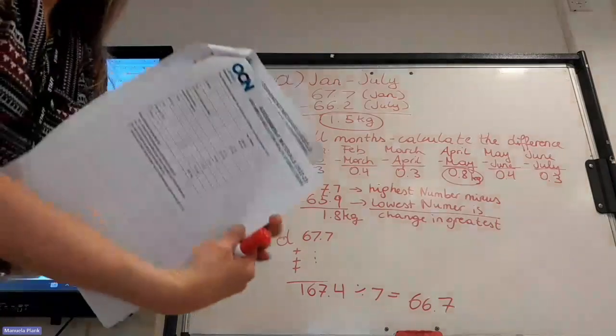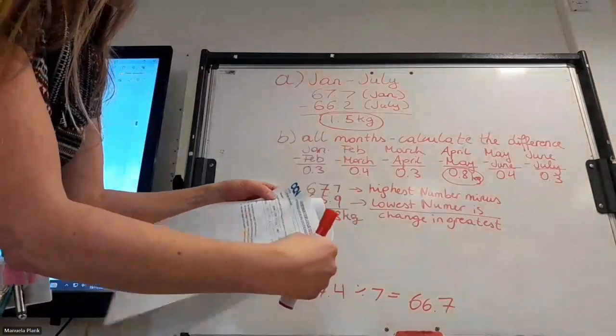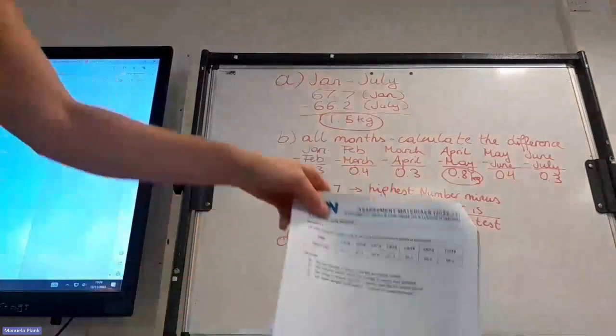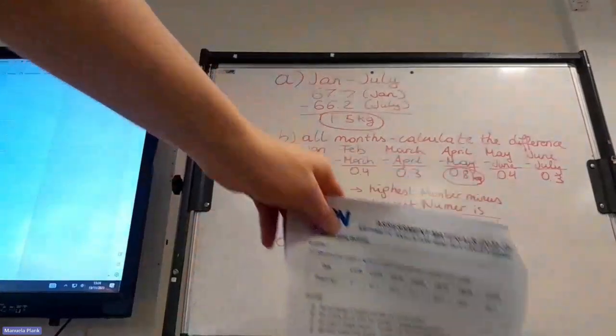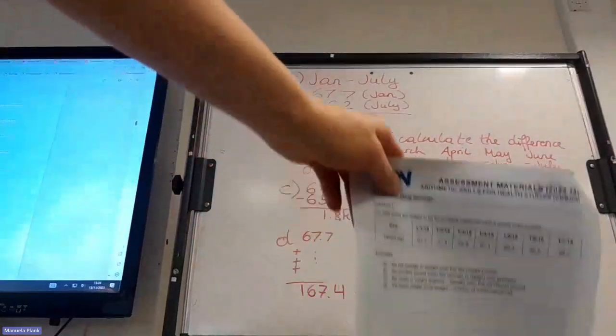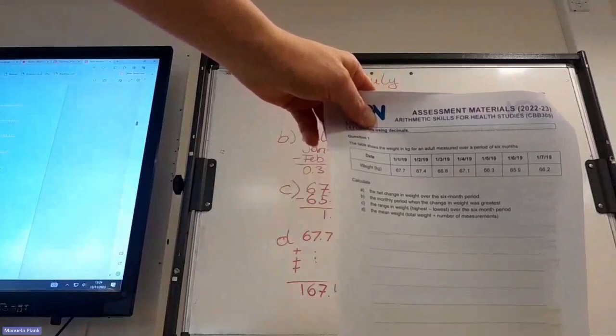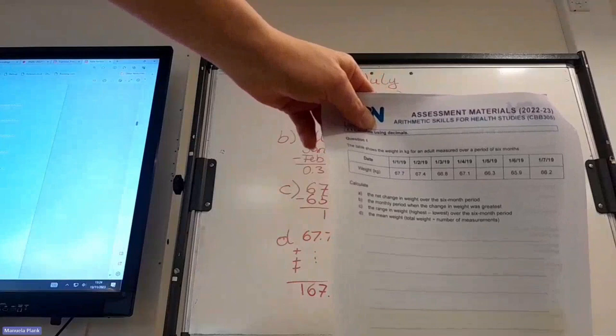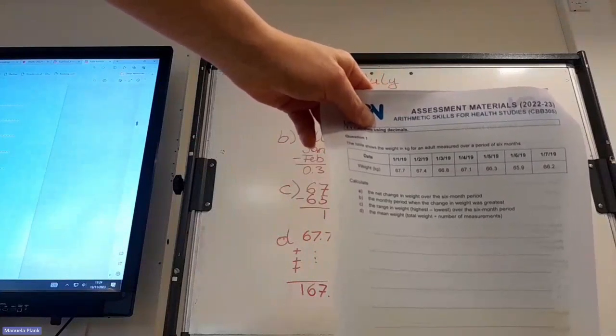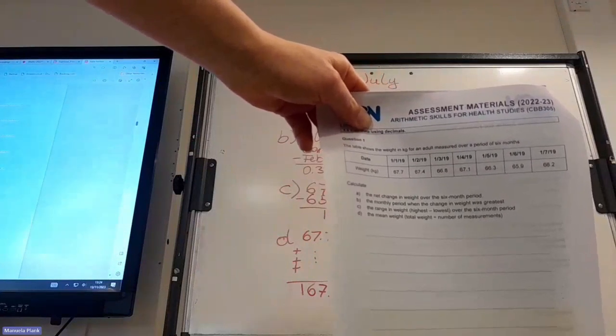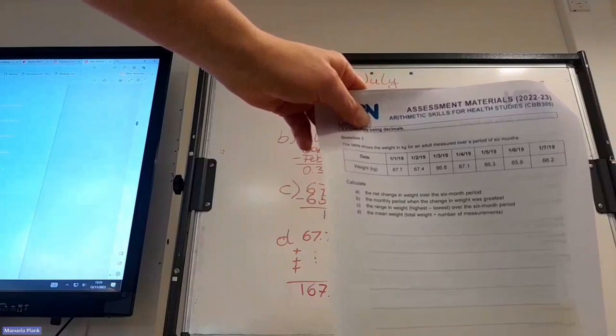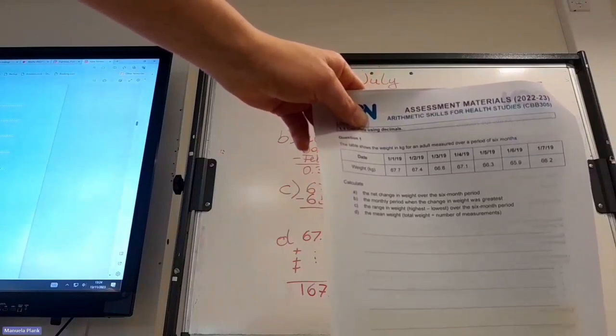And the non-calculator test takes 30 minutes. And this is our sheet. We start with 67.7 and then in February we have 67.4, March 66.8 and so on. And number A, we should calculate the net change in weight over this period.